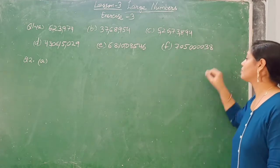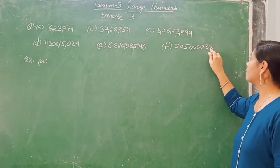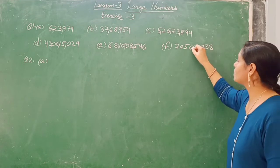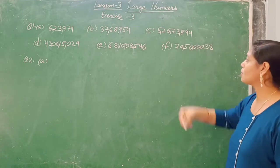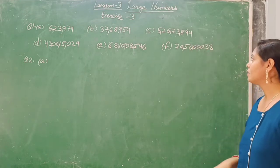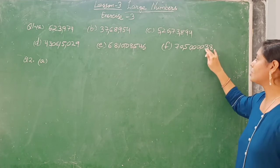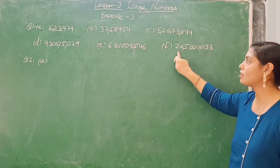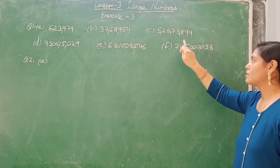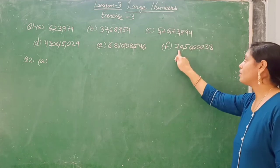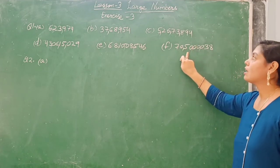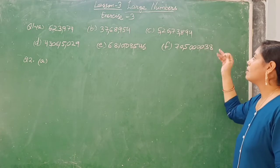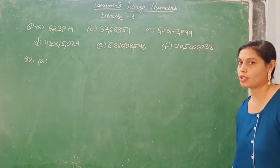Isko bhi aise karenge: three numbers ke baad comma, phir two numbers ke baad comma, phir two numbers ke baad comma. So once again: ones period, thousands period, lakhs period, and crores period. Toh 70 crore, 50 lakh, 38.